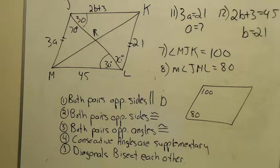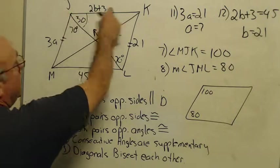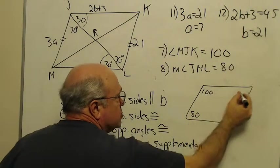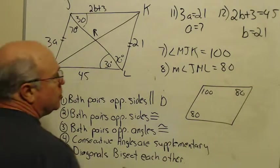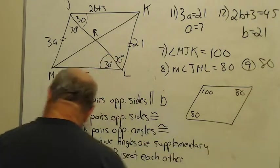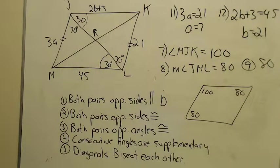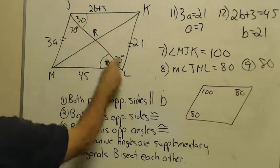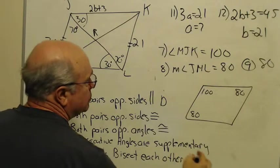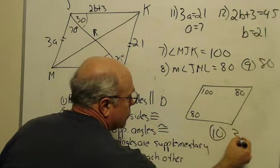And problem number nine is asking us for angle JKL. Well, JKL, that's this angle up here. Opposites are congruent. So it's 80. So number nine is also 80. And finally, angle KJL. KJL, well, we've done that one already. It's 30. So the answer to your number 10 there will be 30.